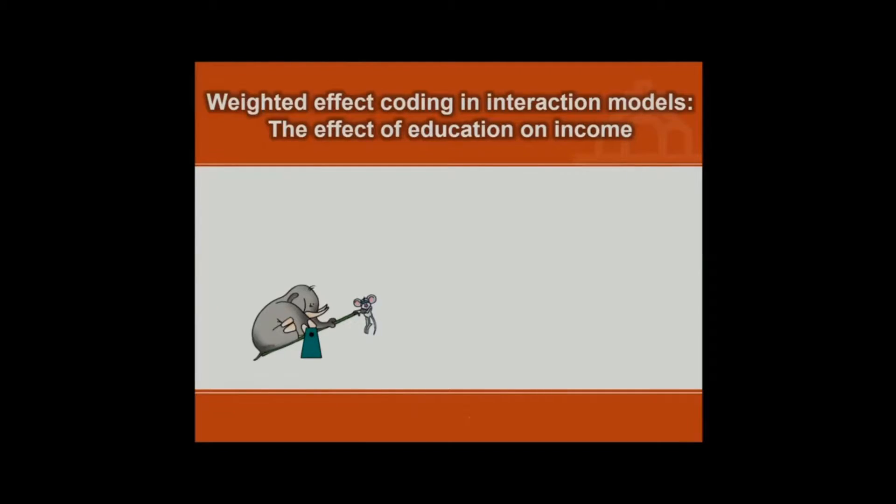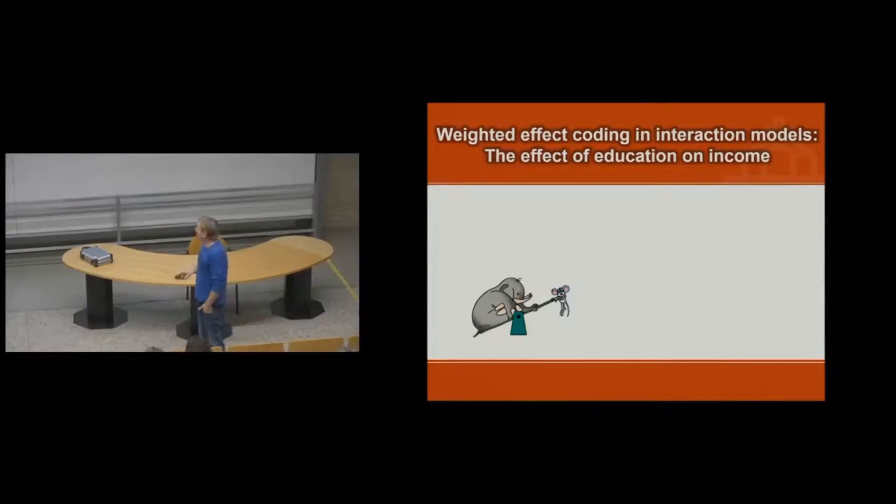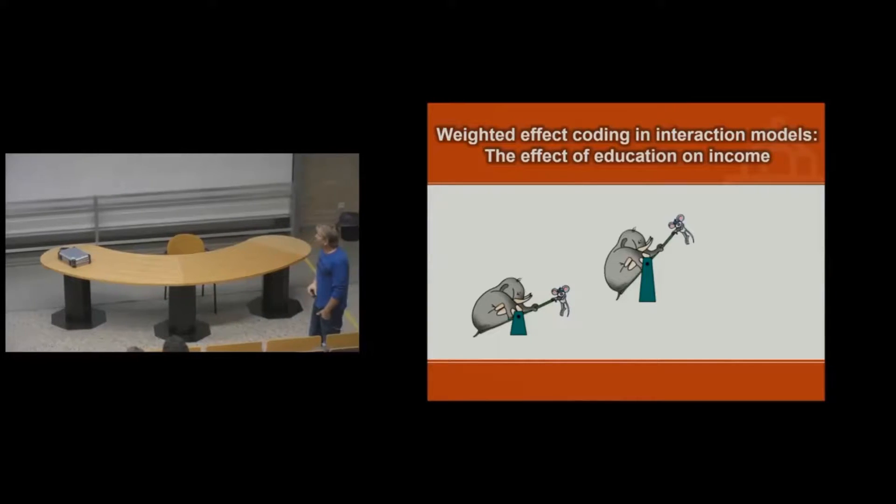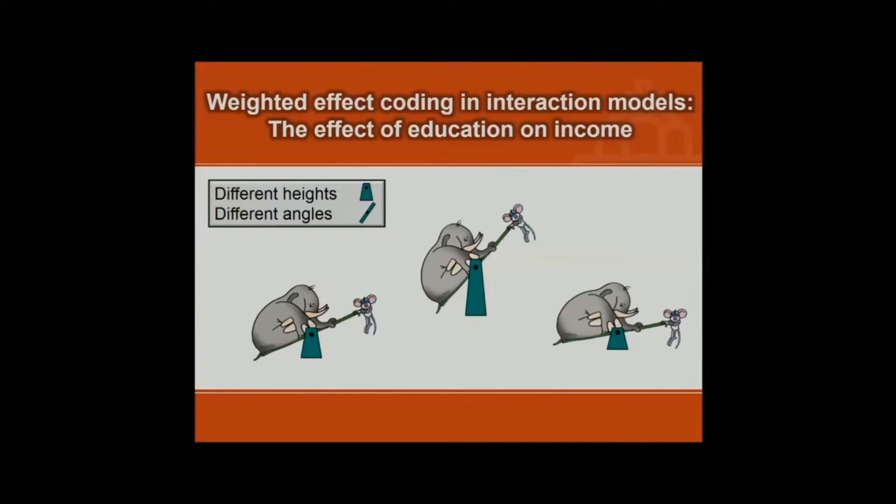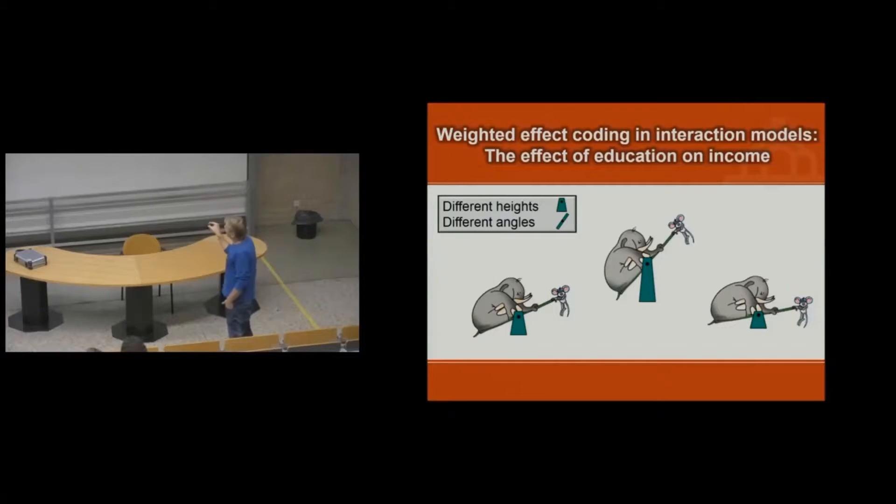And to explain to you interaction models, I know from my experience with students that interaction is a tough thing to explain. I just give it a new shot with the new method because I think if you know what's going on in weighted effect coding that is interesting and it will learn you how interaction works. To show you how interaction works, we have three whip-waps. And as you can see, the angle the teeter-totter makes depends on the height of the device.